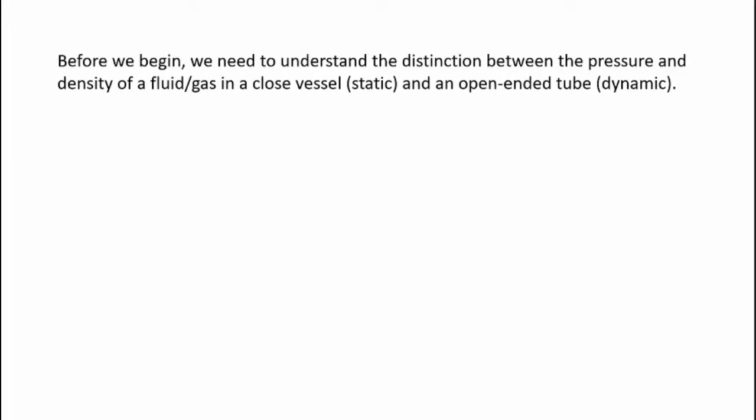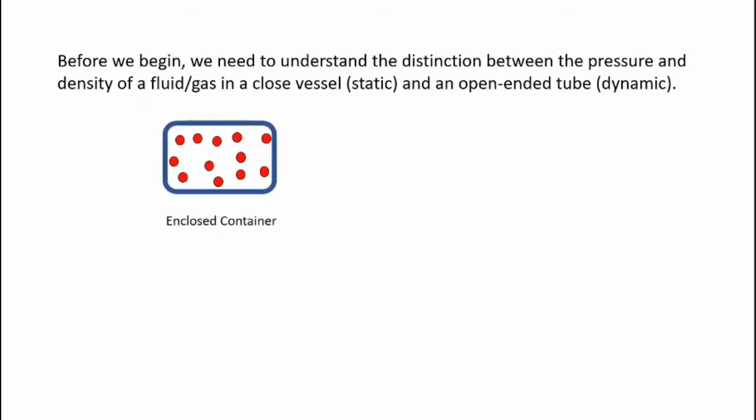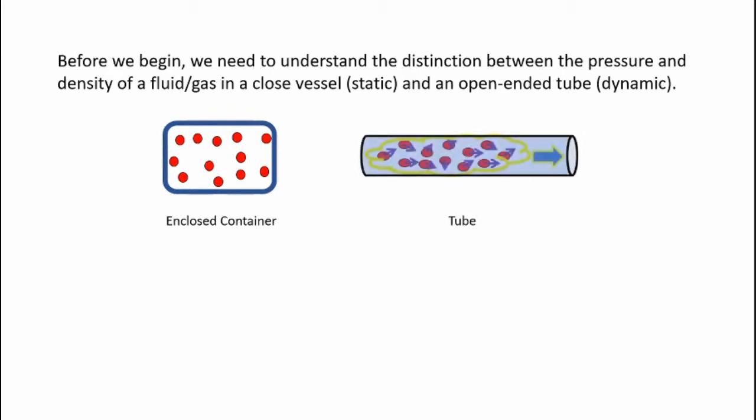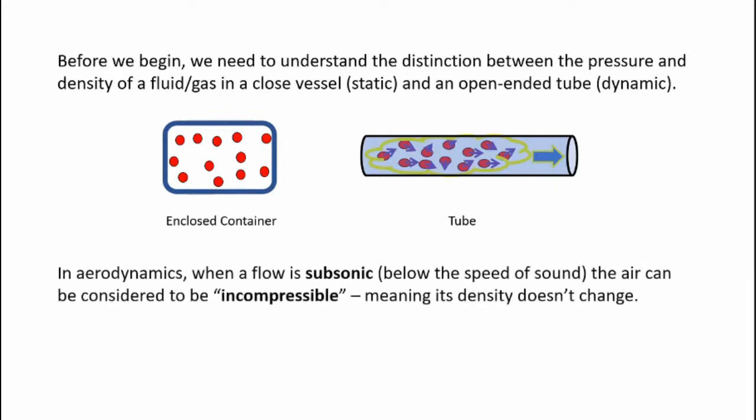Before we begin, we need to understand the distinction between the pressure and density of a fluid or gas in a closed vessel, which is a static situation, versus an open-ended tube where the gas is free to move, which is a dynamic situation. In an enclosed container, molecules bounce around in random directions and impact the walls but don't move in one direction overall. In the open-ended tube, their overall direction is towards the right, so the gas moves through the tube. In aerodynamics, when a flow is subsonic or below the speed of sound, air can be considered incompressible, meaning its density doesn't change.